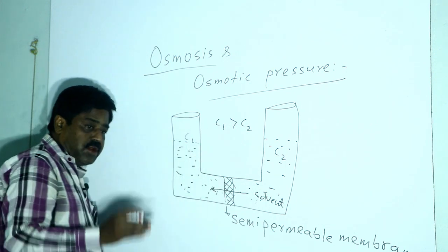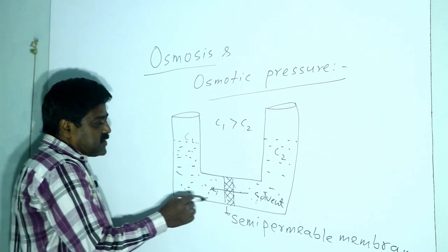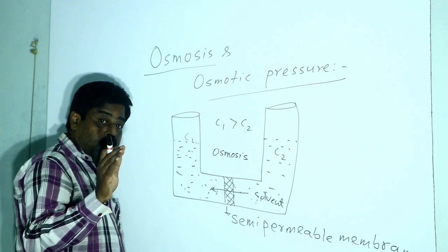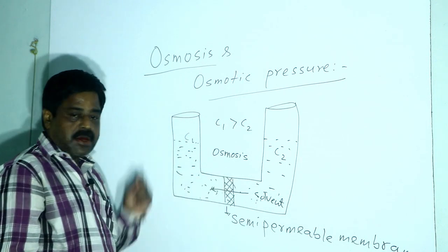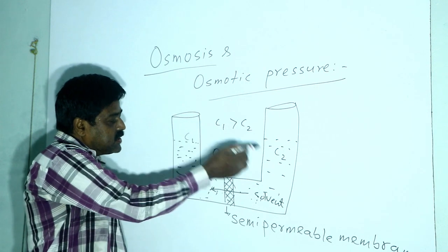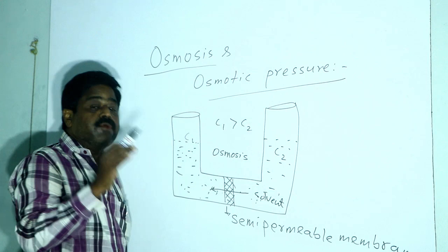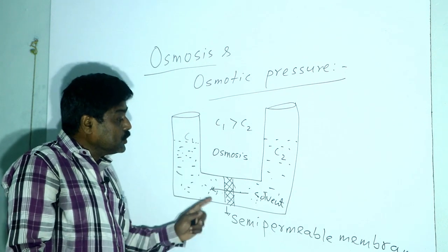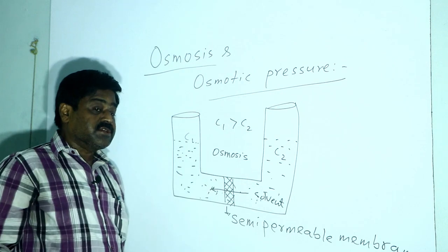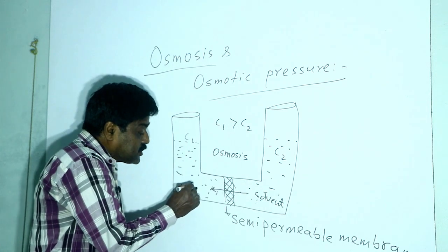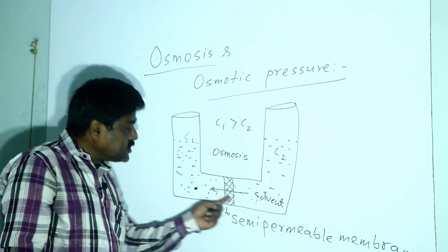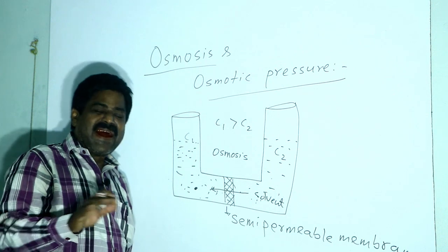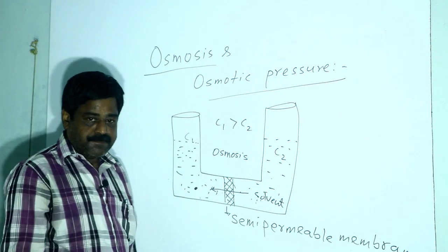This continues until the two solutions tend to reach the same concentration. So the process here is called osmosis. If there is no semi-permeable membrane and concentration C1 is greater than C2, the solute particles from the higher concentration would move to the lower concentration to equalize. But because solute particles cannot pass through the semi-permeable membrane, the solvent moves toward the higher concentration side to establish equilibrium.